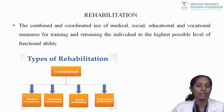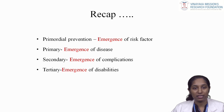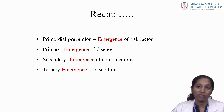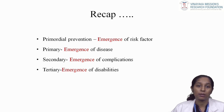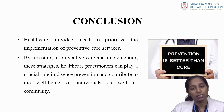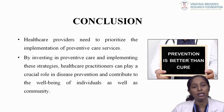Now let us have a quick recap of what we have discussed so far. We have discussed various levels of prevention: namely primordial, primary, secondary and tertiary prevention. Primordial prevention focuses on prevention of emergence of risk factors; primary prevention focuses on prevention of emergence of disease; secondary prevention focuses on prevention of emergence of complications; and tertiary prevention focuses on prevention of emergence of disabilities. To conclude, as we all know prevention is always better than cure, and as we have discussed, prevention can be achieved at any stage of disease, and health care providers need to prioritize the implementation of preventive care services. Investing in preventive care and implementing various preventive strategies can play a crucial role in disease prevention and contribute to the well-being of individuals as well as the community.